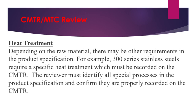The next item is heat treatment. During material manufacturing, heat treatment is applied, and what type of heat treatment was used must also be mentioned in the material MTC. Depending on the raw material, there may be other requirements in the product specification. For example, 300 series stainless steel requires specific heat treatment which must be recorded on the CMTR. The reviewer must identify all special processes in the product specification and confirm they are properly recorded on the CMTR.